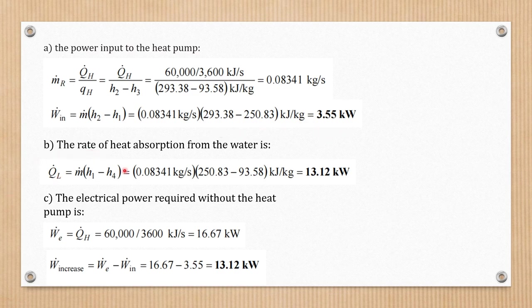Next, we're going to determine the rate of heat absorption from the water. Using this equation, Q̇_L is equal to the mass flow rate times the quantity (h1 minus h4). Substituting all the given values, we get 13.12 kilowatts.